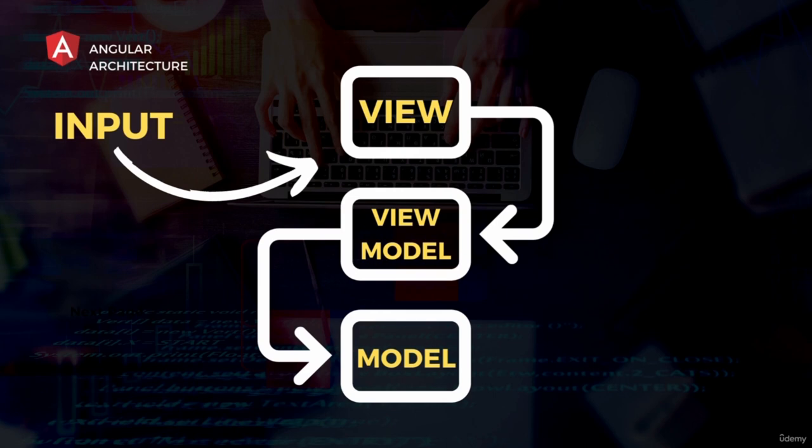The model in Angular refers to the data and business logic of an application. The data model represents the data and entities used in the application, such as user data, product data, or any other relevant data. The business logic defines the rules and behaviors that govern how the data is accessed and manipulated within the application.